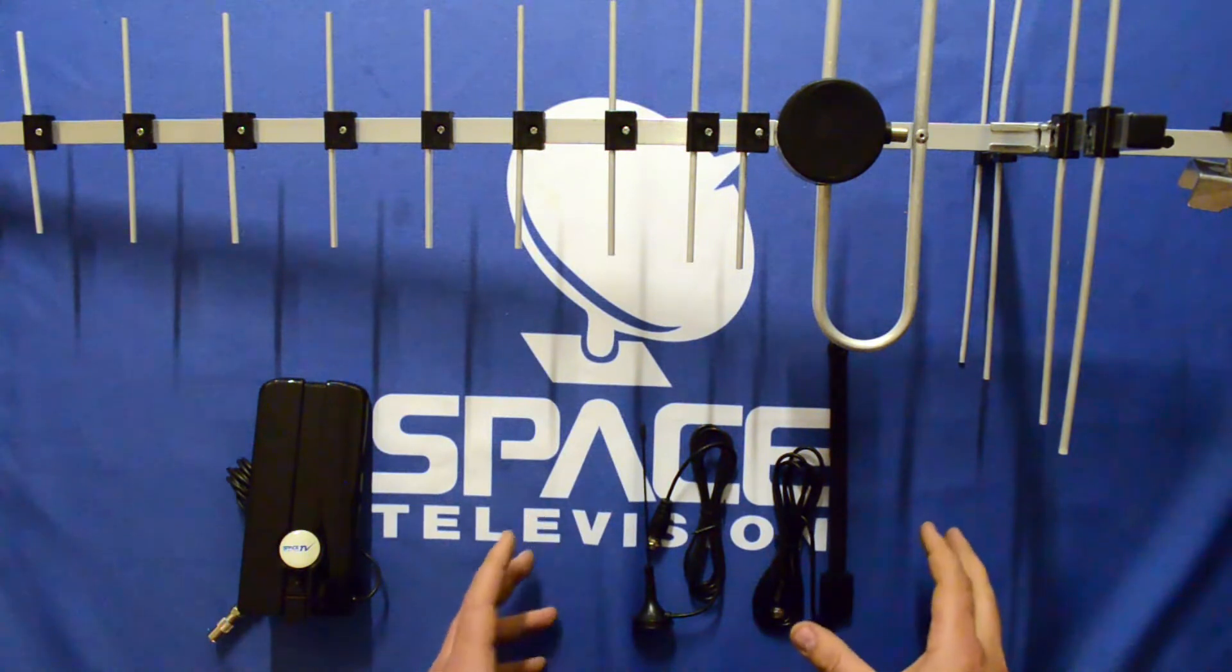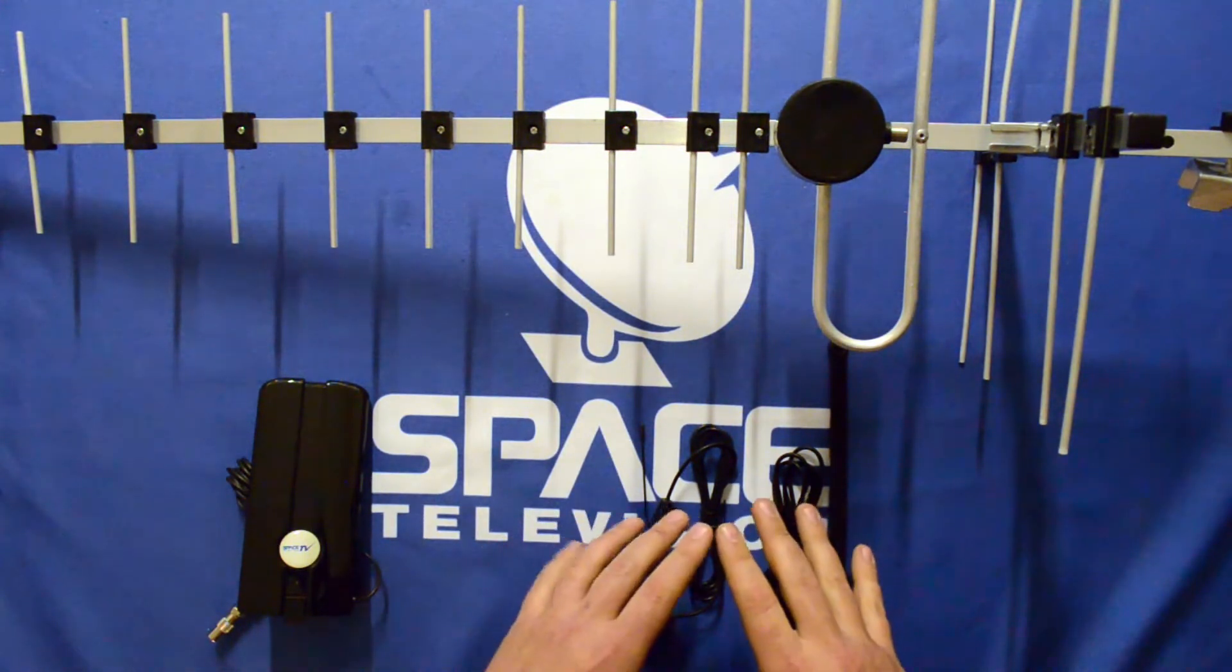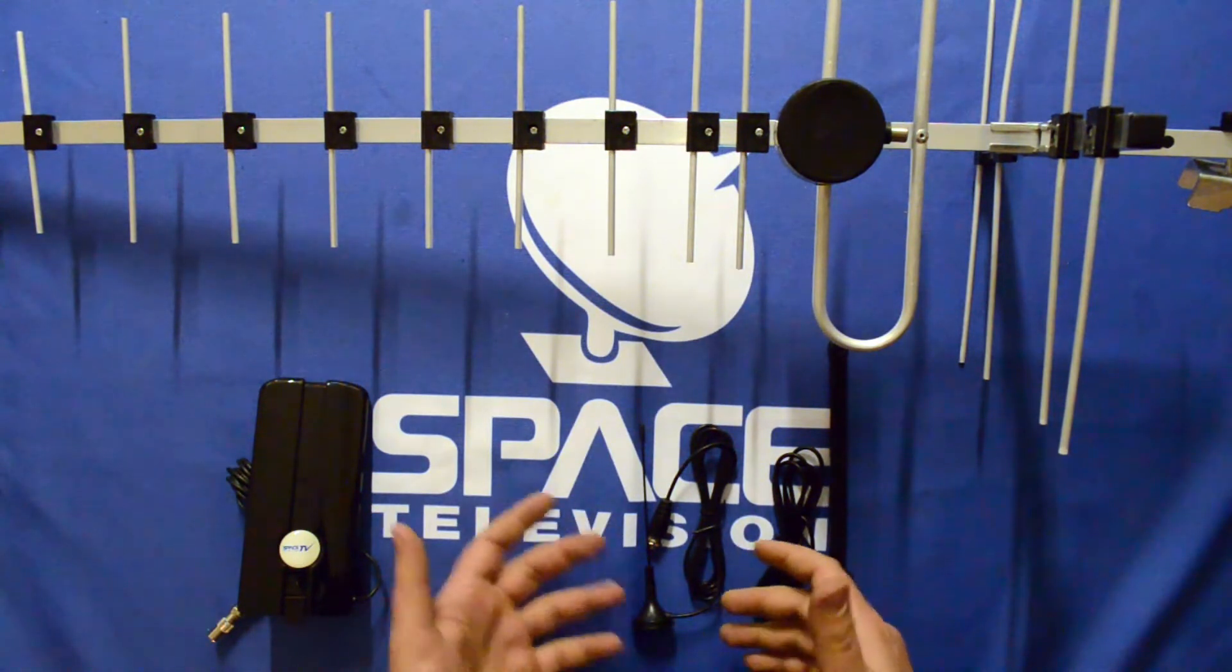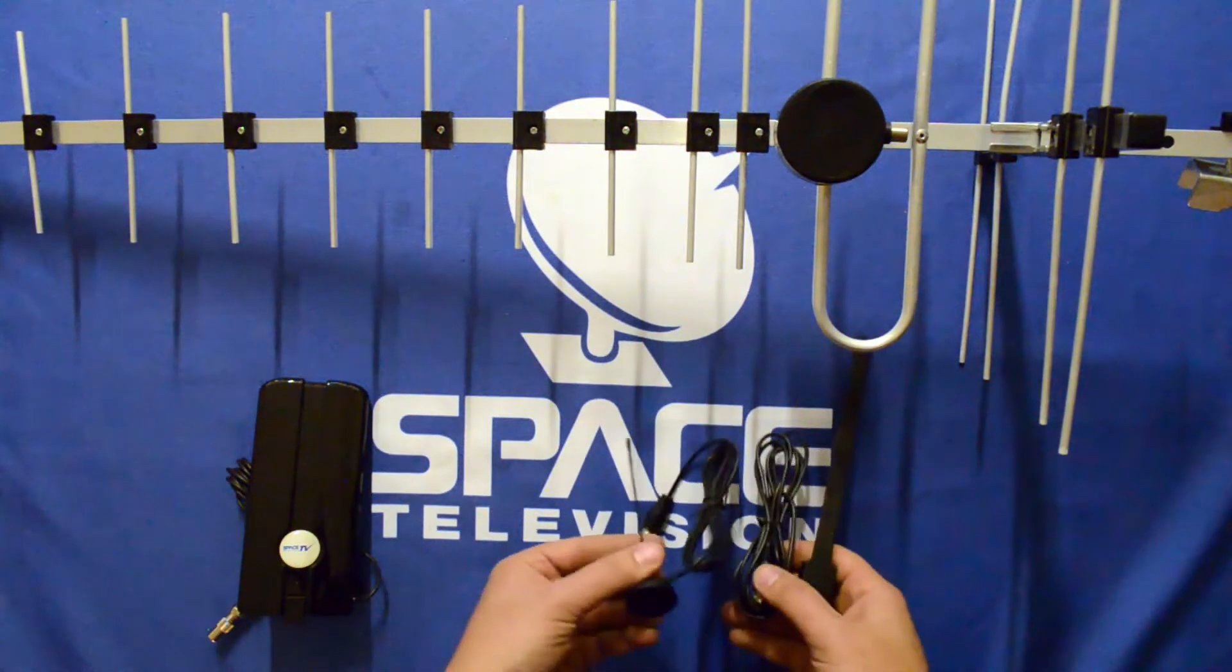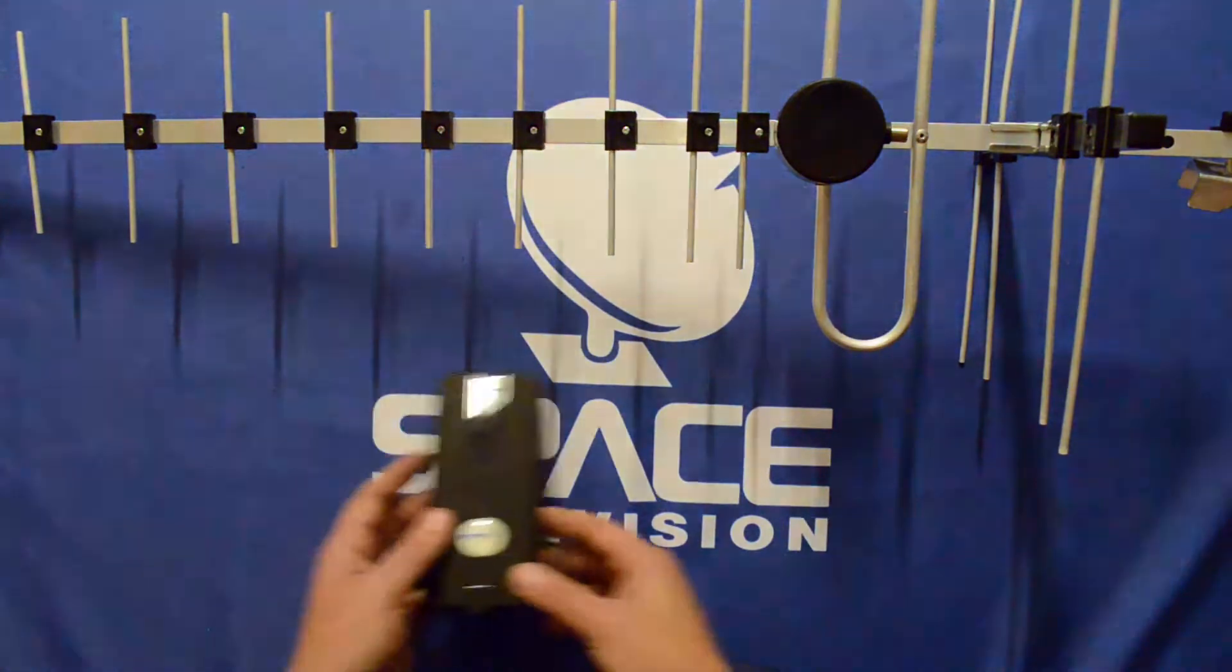within close proximity to the transmission source. What that means is if you're within a few kilometers of the Sentech tower that's broadcasting in your area, these antennas should be fine. If you move a little bit further away, then you're probably going to need one of these antennas.